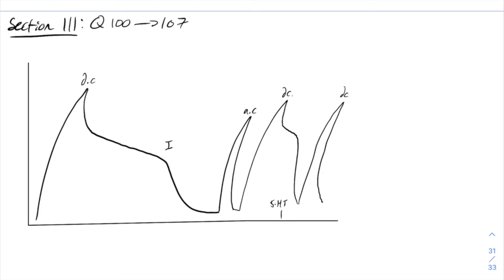Question 100 asks: in contrast to the effect of the DC stimulus, the figure indicates that the AC stimulus has what effect? I've drawn out the diagram here, and we can see that the length of time associated with the contraction is a lot smaller than with DC stimulation. AC stimulation fails to induce a prolonged contraction — the muscle remains contracted for less time with AC than with DC. So the answer for 100 has to be B.